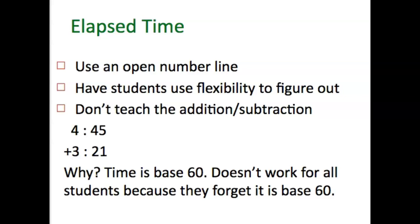What you do not want to do with elapsed time is teach only the concept of addition and subtraction algorithmically. For example, if a movie starts at 4:45 in the afternoon and the movie is three hours and 21 minutes long, what time does the movie get out? If you only teach them to add and they try to add 45 plus 21, they'll get 66 — which doesn't work because time is base 60, with 60 minutes in an hour. A lot of kids struggle with understanding how to regroup those 60 minutes into an hour, so be careful if you decide to teach elapsed time by a pure algorithm.